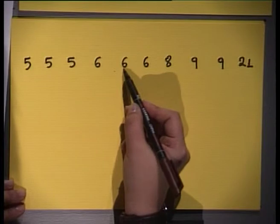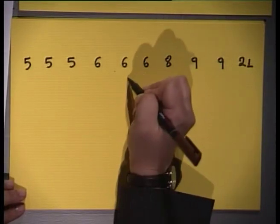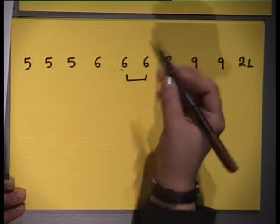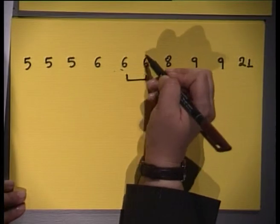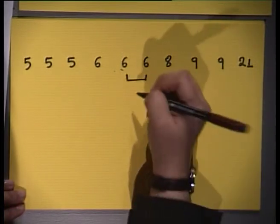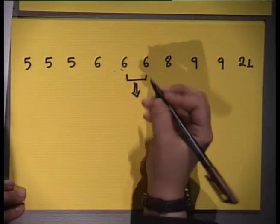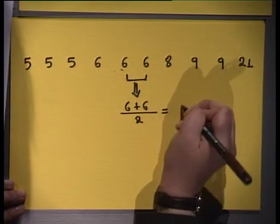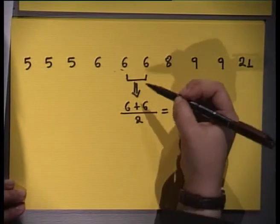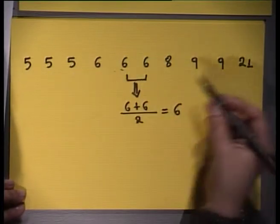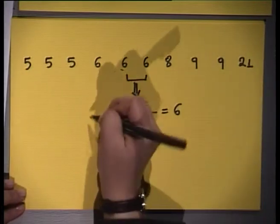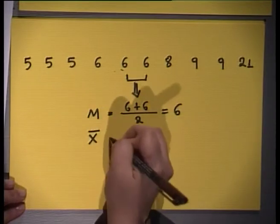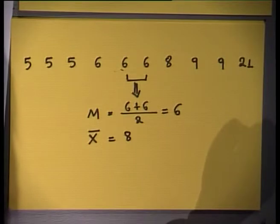We find that the median is somewhere between the middle two values. It doesn't matter that we observe the same number; we calculate the average of the two, which is six. So for this data set the median is 6, denoted by capital M. The sample mean is 8.